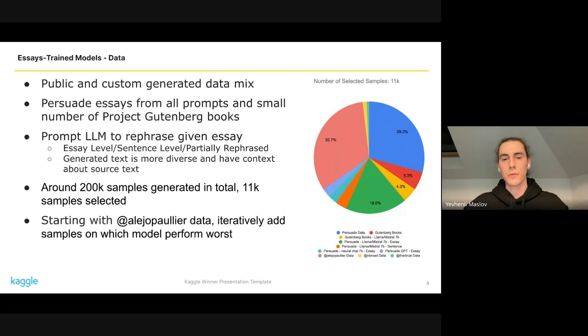We generated around 200,000 samples this way, but most of them were too easy for the model to classify. So we decided to select only the hard to classify samples.